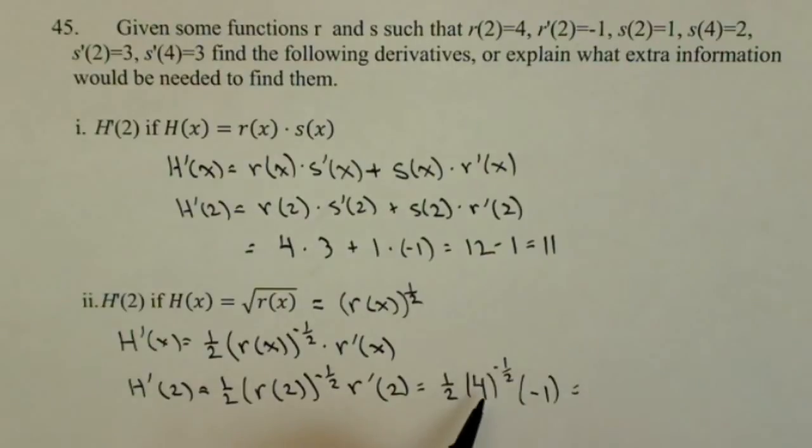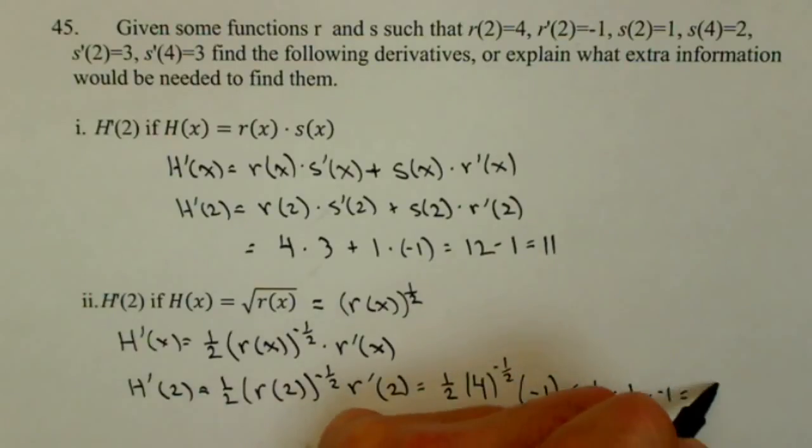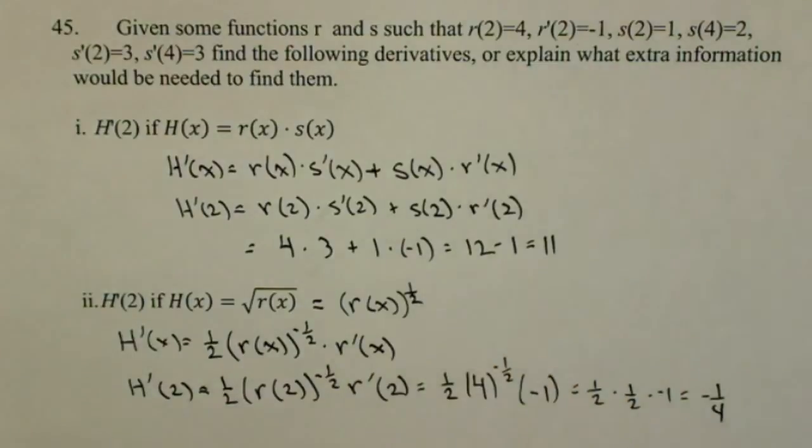Four to the negative one half, that's one over the square root of four, which is one over two, so we end up with one half times one half times negative one, or negative one fourth.